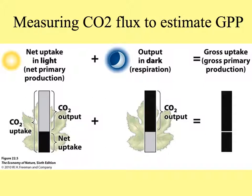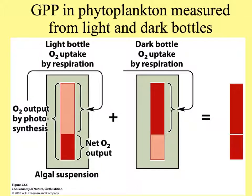We can measure how much carbon dioxide is taken up or released in the light and in the dark. The difference is the net uptake used to make new tissues, and adding both together gives gross primary production. In light and dark bottles used in aquatic systems, oxygen output is measured to get the same kind of information.